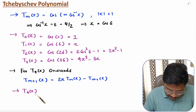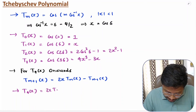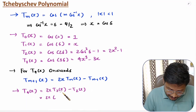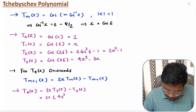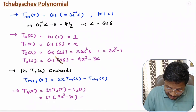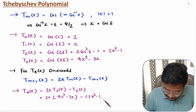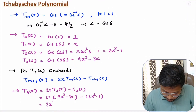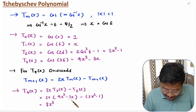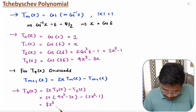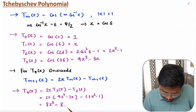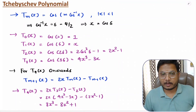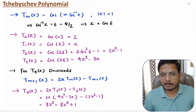For example, to calculate T_4(x): T_4(x) = 2x * T_3(x) − T_2(x) = 2x*(4x³ − 3x) − (2x² − 1) = 8x⁴ − 6x² − 2x² + 1 = 8x⁴ − 8x² + 1. That is how one can identify further Chebyshev polynomials.